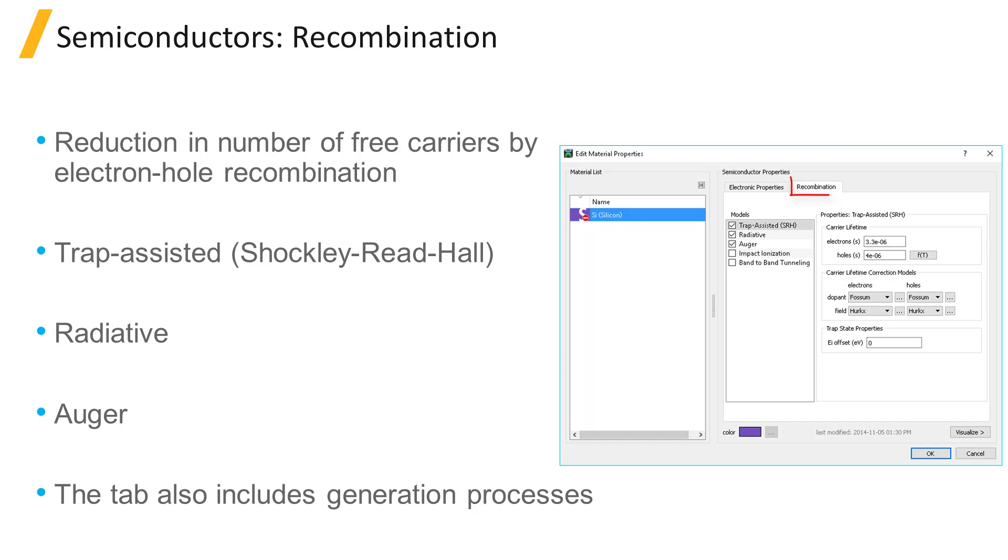Under the recombination tab of the material property editor window, Device provides models describing various recombination processes including trap-assisted recombination, also known as Shockley-Reed-Hall or SRH recombination, Auger recombination, and radiative recombination. In addition, it contains models for carrier generation processes including impact ionization and band-to-band tunneling.